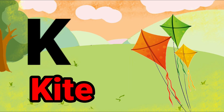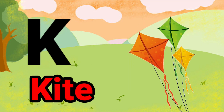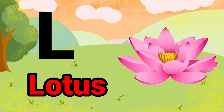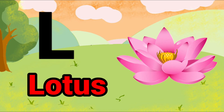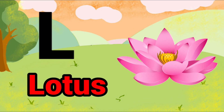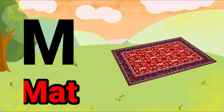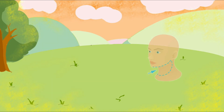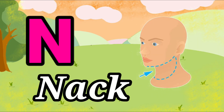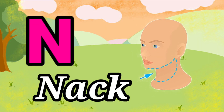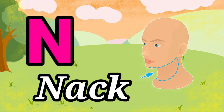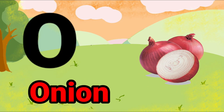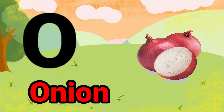K for kite, L for lotus, M for mat, N for neck, O for onion.